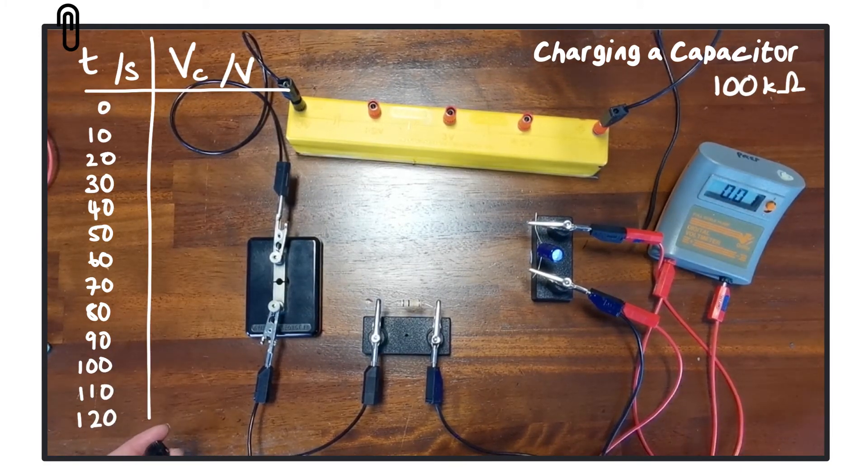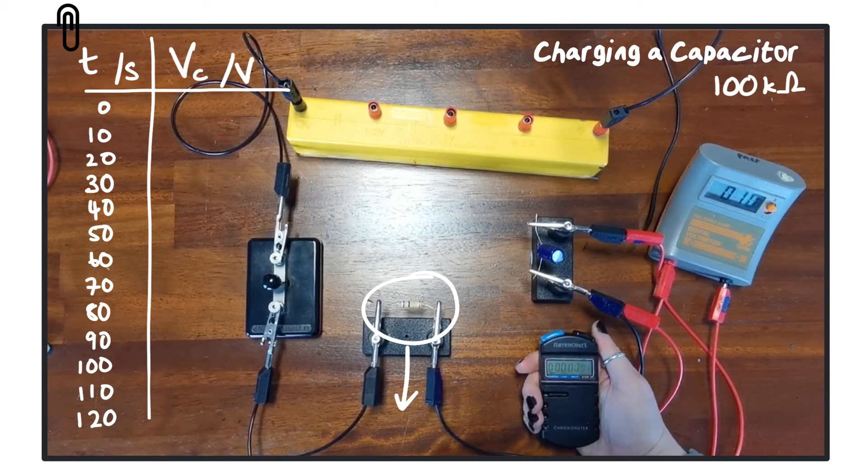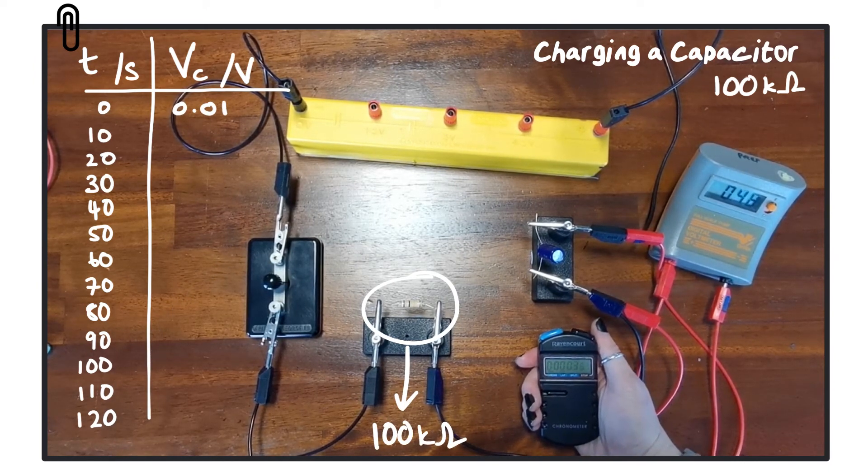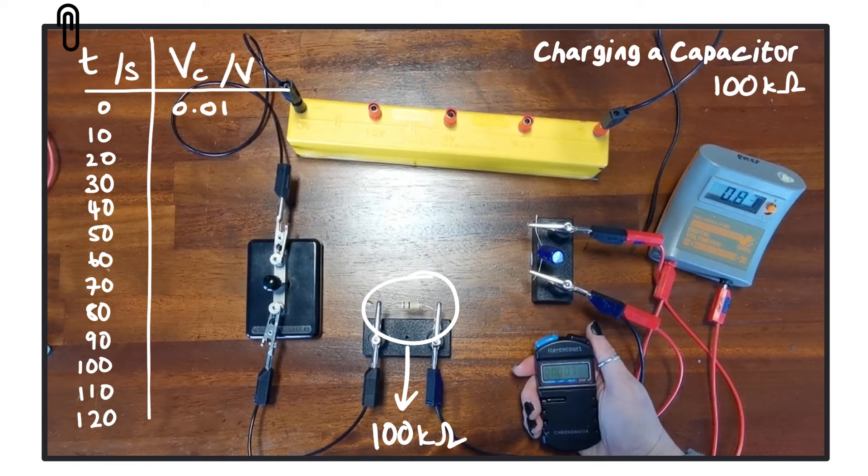So now we're going to repeat that experiment, except this time we're going to change the 22 kOhm resistor to a 100 kOhm resistor. And we'll see what effect that has on the time it takes for the capacitor to fully charge.